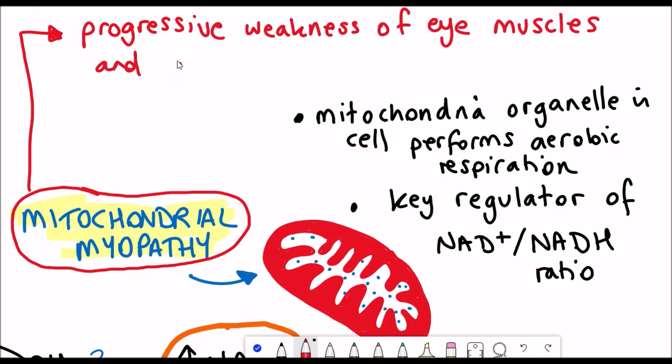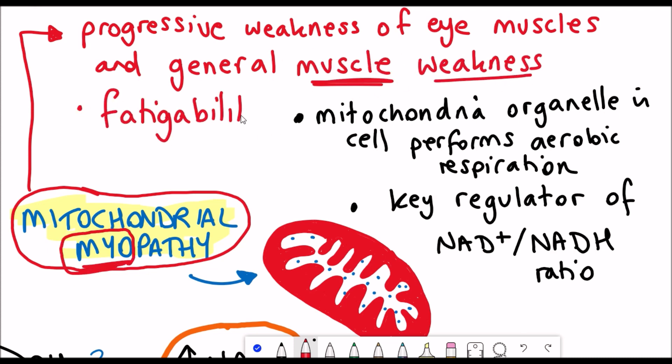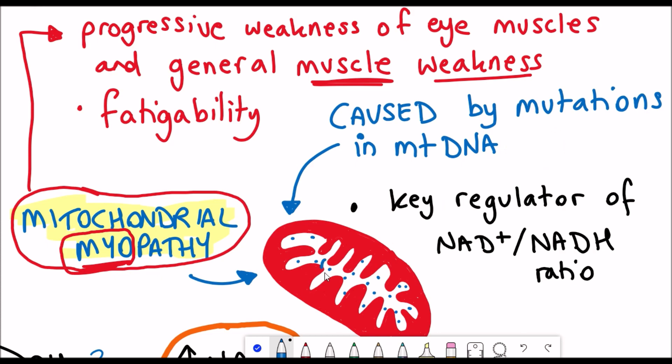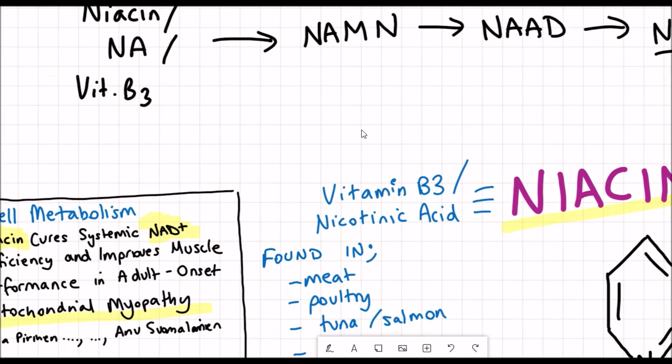The mitochondrial disease that they focused on was mitochondrial myopathy. This disease is characterized by a progressive weakness of eye muscles but also in general you see decline in body muscle weakness and fatigability. The major cause of this disease seen in adults is due to the accumulation of mutations in the DNA that's found in the mitochondria. Yes that's right you don't only have DNA in the nucleus and so these mutations are often deletions.